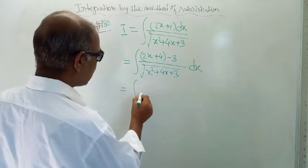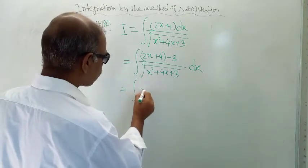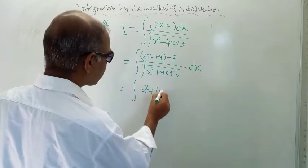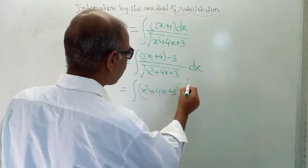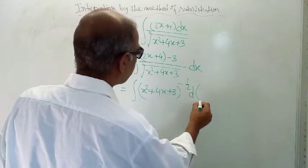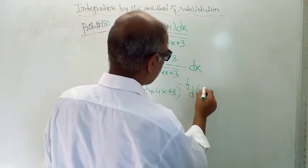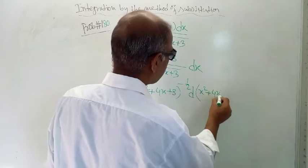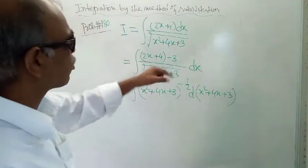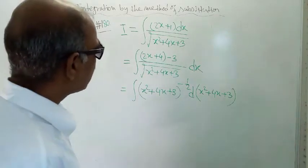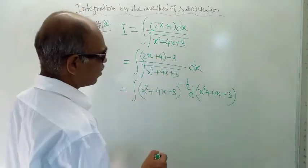Now this can be written as x squared plus 4x plus 3 whole to the power minus half, and d of x squared plus 4x plus 3. The derivative of this is 2x plus 4, and this minus 3 is there.